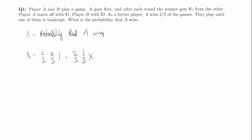So we can say x is equal to two thirds times two thirds times one, plus two thirds times one third times x. This is equal to four over nine plus two over nine x. Bringing the x term to the left hand side we get seven over nine x is equal to four over nine. So it follows that x is equal to four over seven.